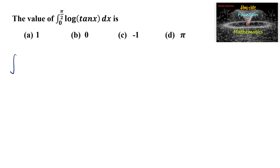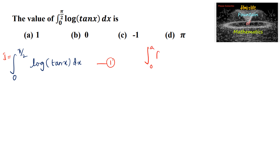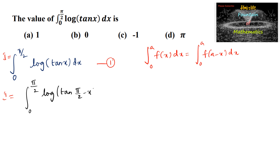The value of integral from 0 to π/2 of log(tan x) dx. Let us consider this to be I — equation 1. We have the property that integral from 0 to a of f(x) dx equals integral from 0 to a of f(a minus x) dx. By using this property, we can write I equals integral from 0 to π/2 of log(tan(π/2 minus x)) dx. Since tan(π/2 minus x) equals cot x, this becomes integral from 0 to π/2 of log(cot x) dx.